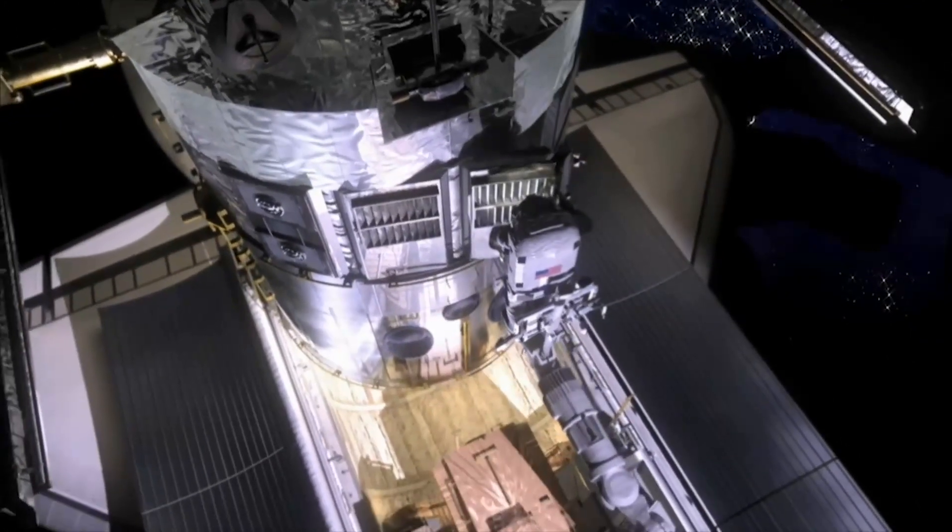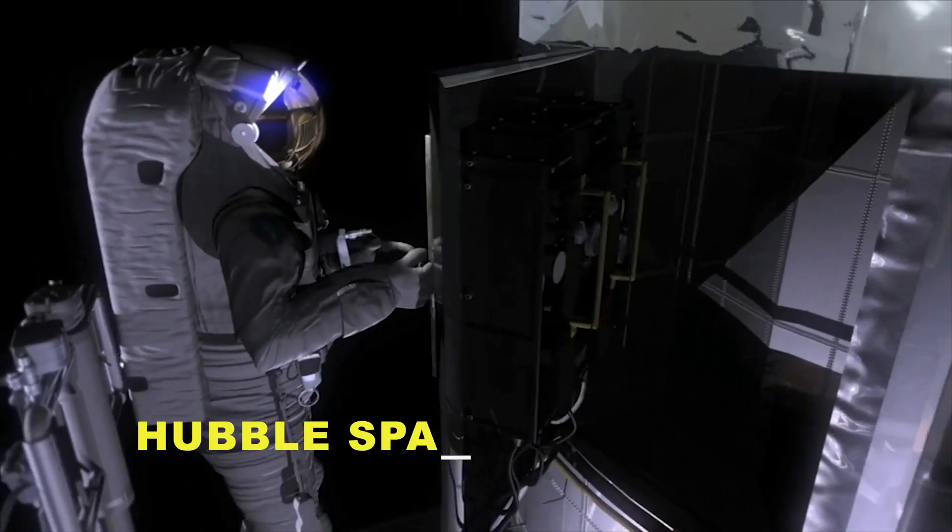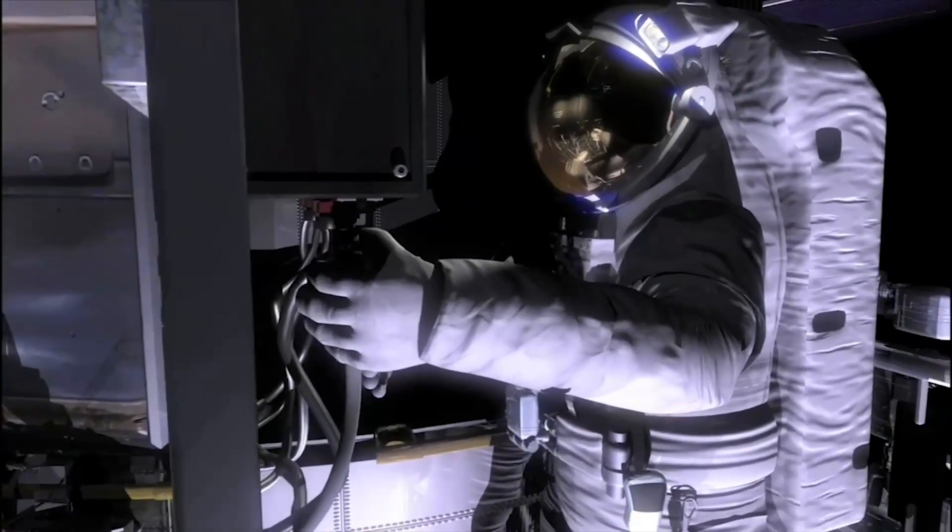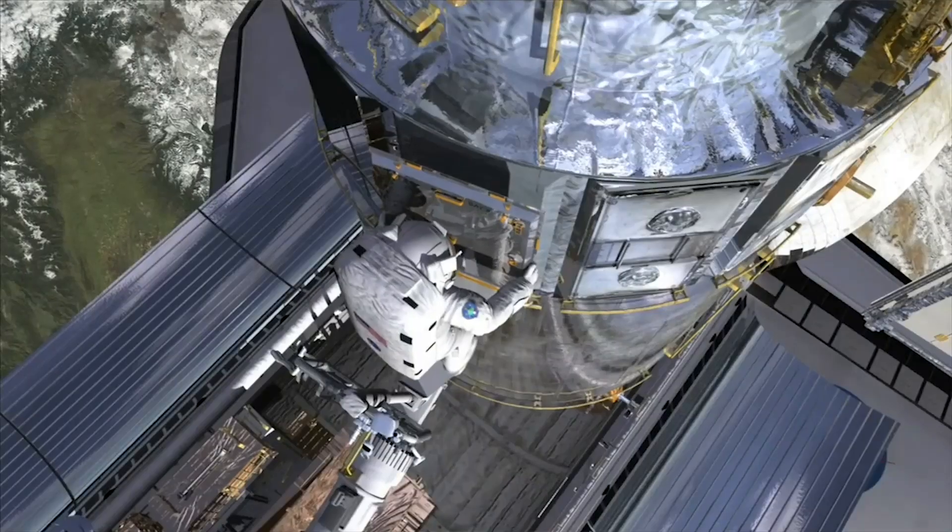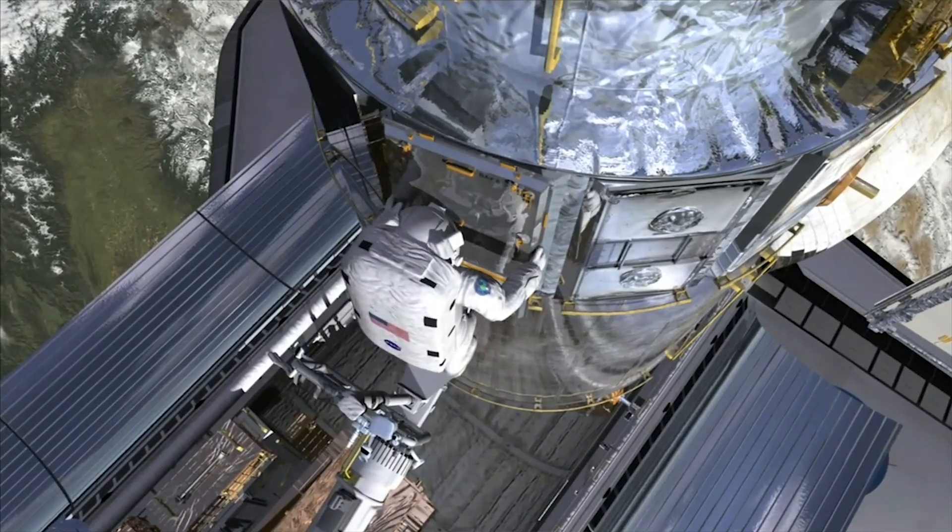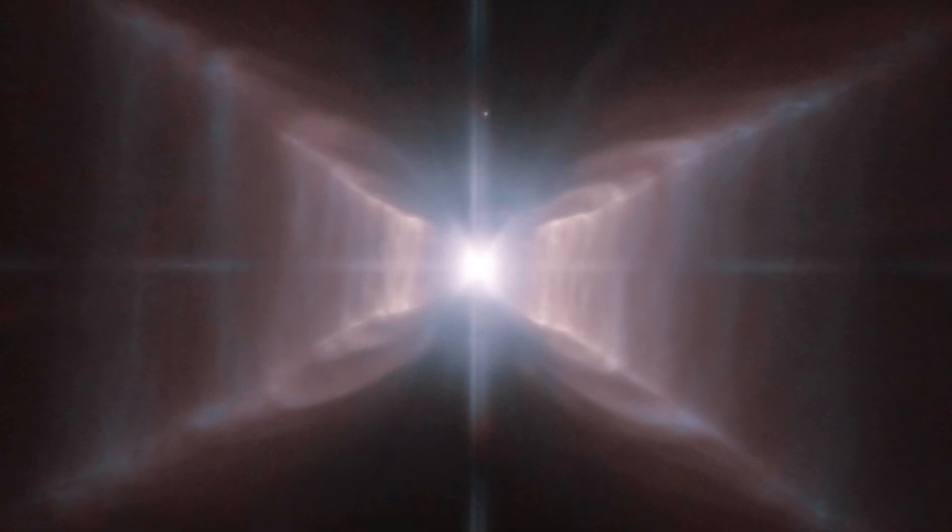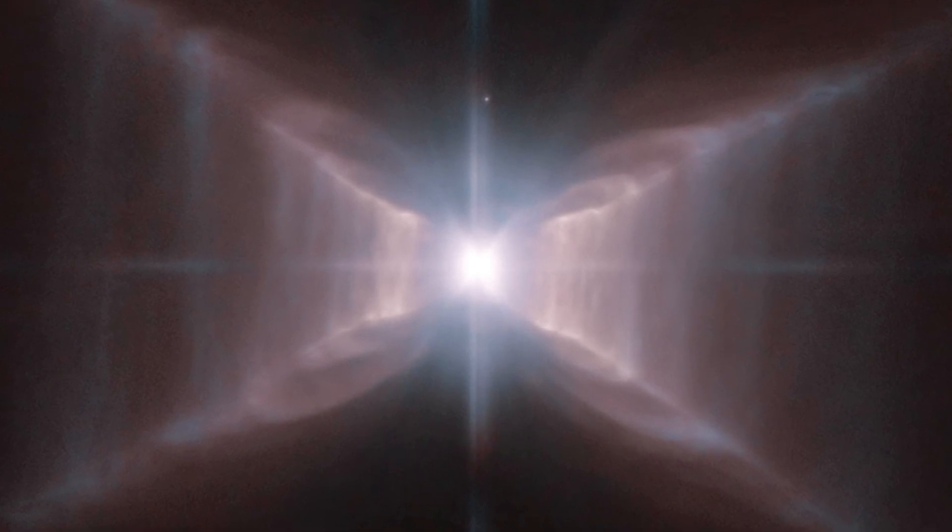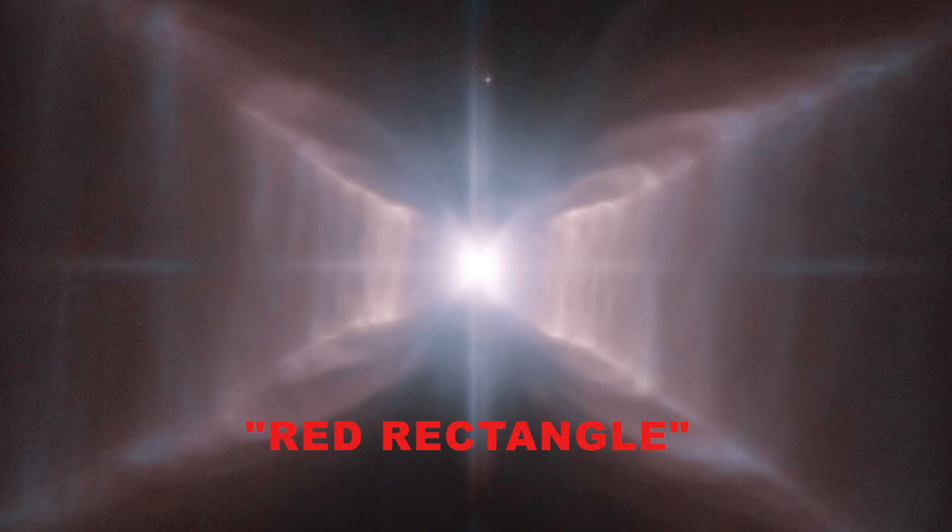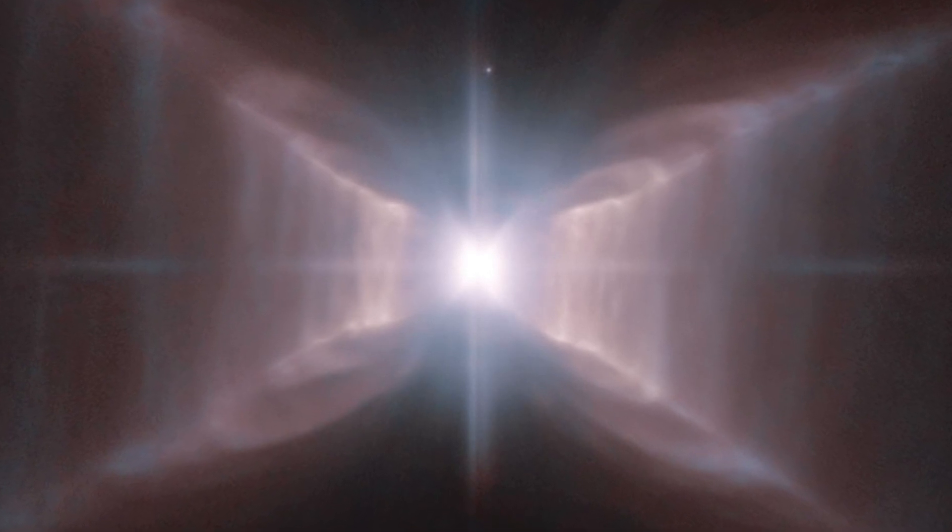A new image taken with NASA's Hubble Space Telescope reveals startling new details of one of the most unusual nebulas known in our Milky Way. Catalogued as HD 44179, this nebula is more commonly called the Red Rectangle because of its unique shape and colour as seen with ground-based telescopes.